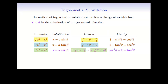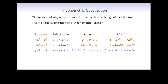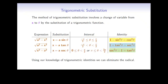We will make each of these substitutions on corresponding intervals so that our change of variable is invertible, allowing us to change back to the variable x later on. The interval corresponding to secant theta could be slightly different depending on which textbook you're using. Regardless, the identities listed here are what will be used to simplify these expressions, and we can use these trigonometric identities to eliminate the square roots.